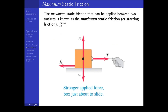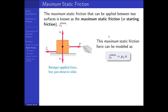There is a maximum static friction that can be applied between two surfaces, known as the maximum static friction — sometimes called the starting friction — because you must pull horizontally with at least that much force to make the block start moving. I denote that as F s maximum. The maximum static friction force is equal to mu sub s times the normal force. That's how we calculate it, but it doesn't mean that's the force always acting on the block — it's the force you must exceed for the block to start to slide.